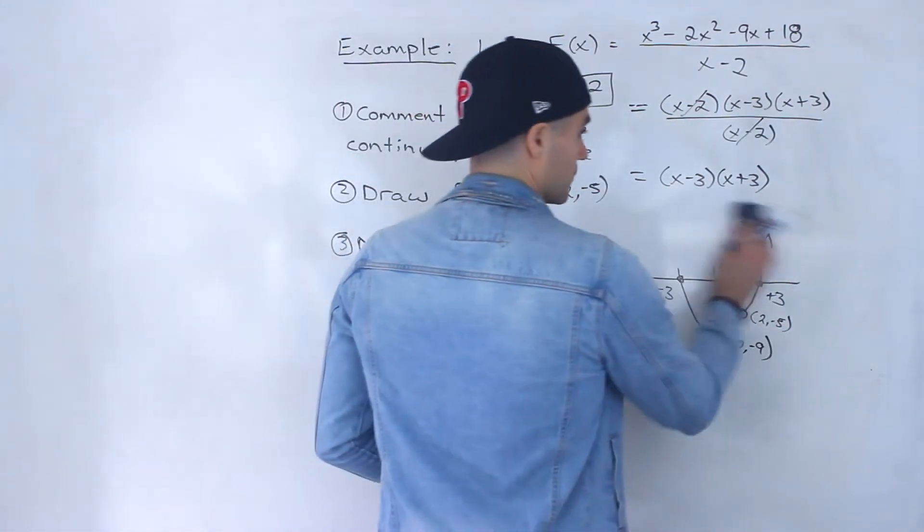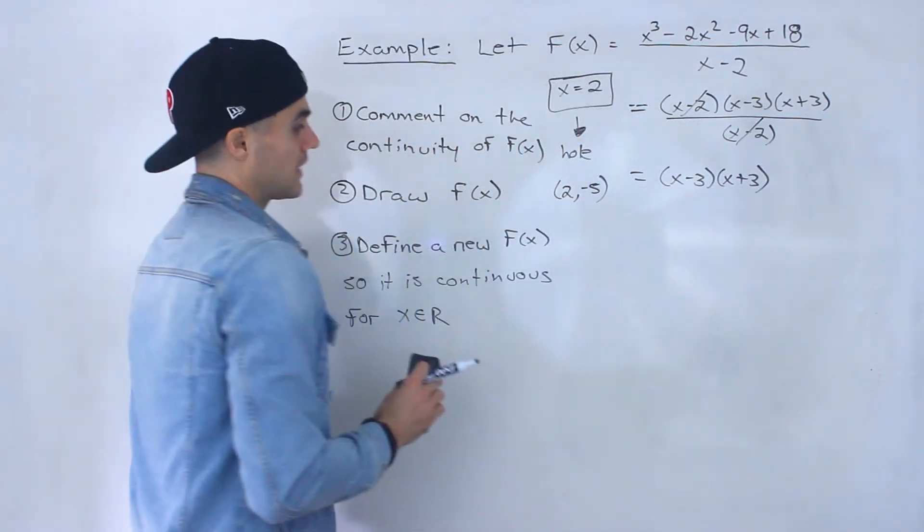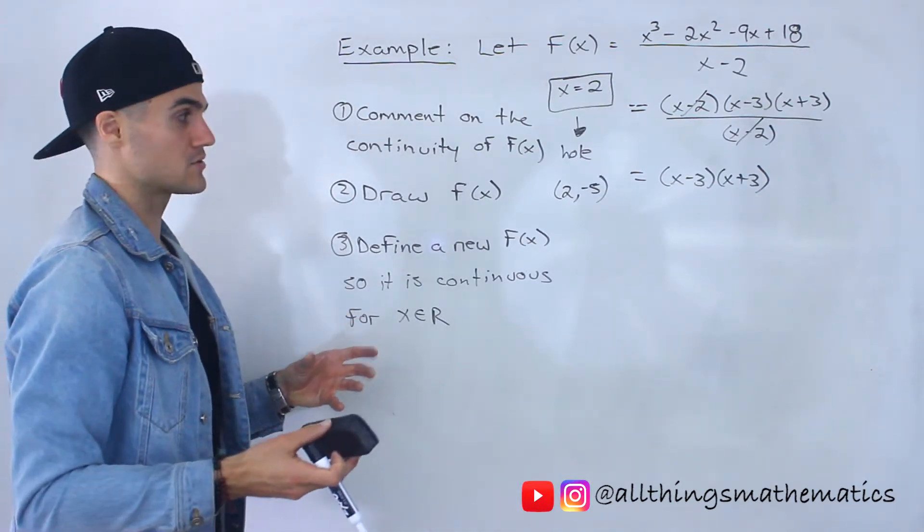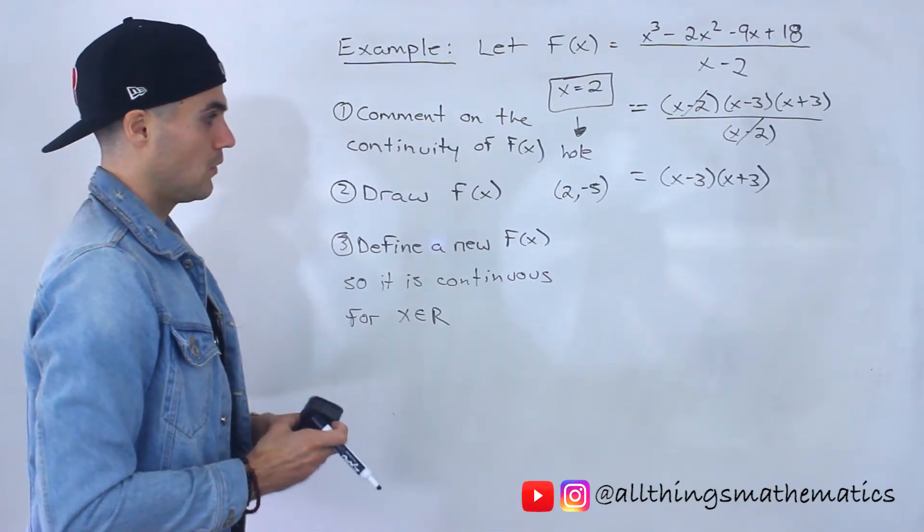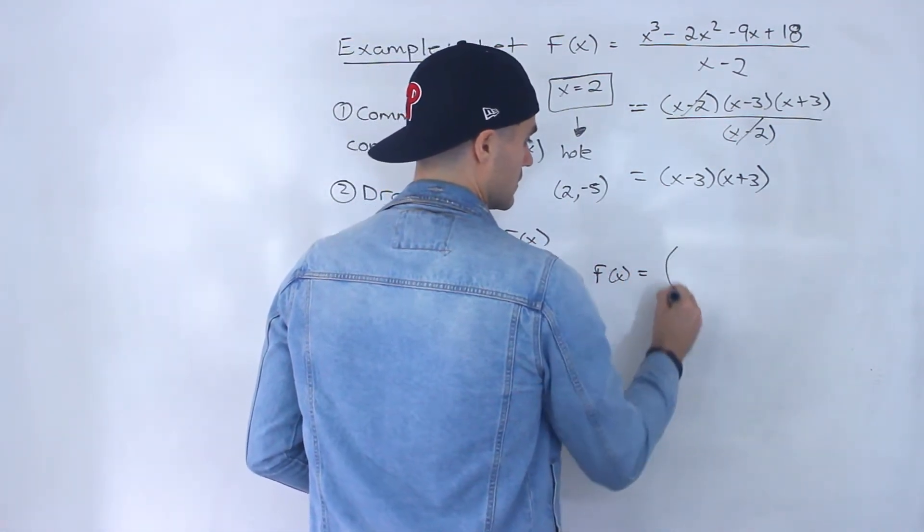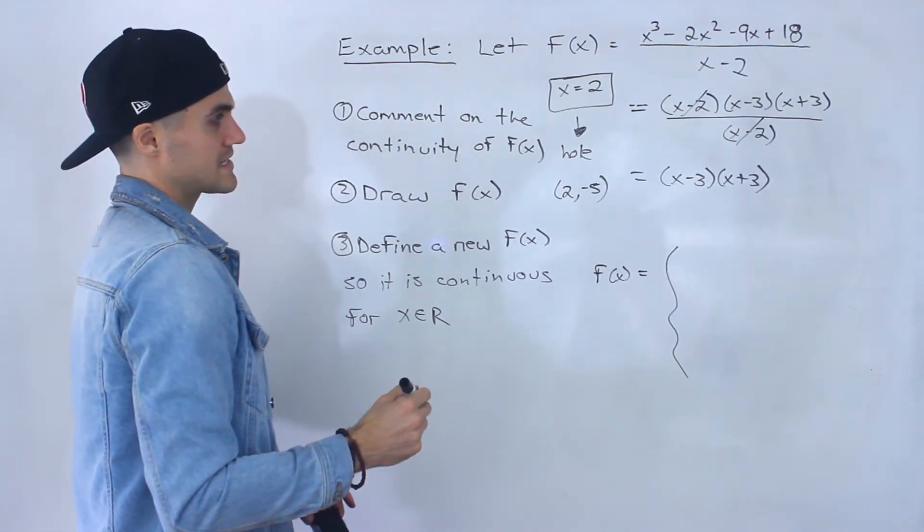All right, so number 3 now, what we got to do is we got to define a new function so it's continuous for all x values. So how can we do that? Well, what we can do is we can actually take f of x and create a piecewise function. So what we would say